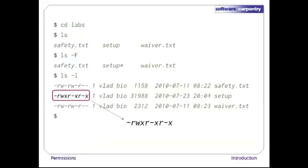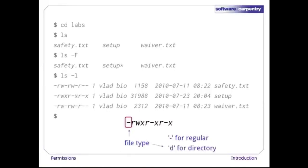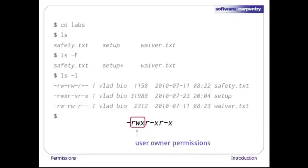Let's expand one of those permission strings and have a closer look. The first character tells us what type of thing this is: a dash means it's a regular file, while a D means it's a directory. The next three characters tell us what permissions the file's owner has — here, the owner can read, write, and execute the file. The middle triplet shows us the group's permissions. If the permission is turned off, we see a dash, so r-x means read and execute, but not write.